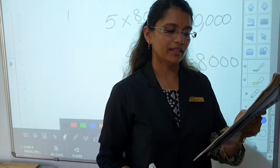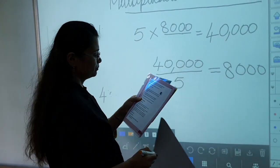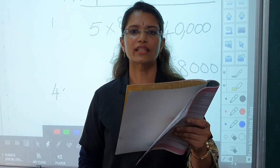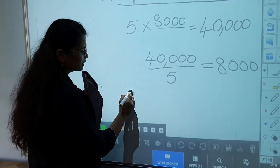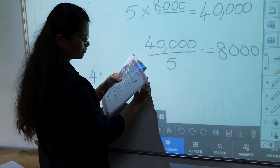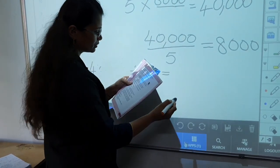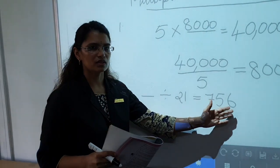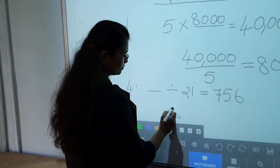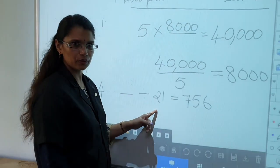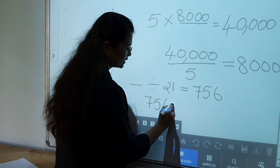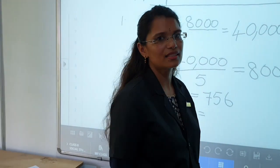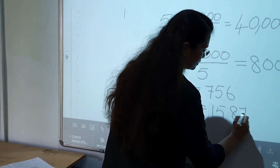Now we will do another question. A number divided by 21 gives 756. What is the number? A number divided by 21 is equal to 756. What is the answer? How to do this, children? 756 into 21 is equal to 756 into 21 is 15,876.